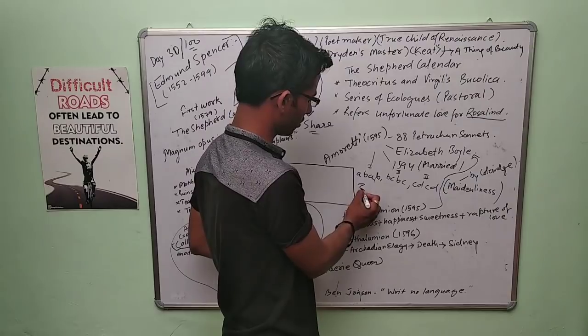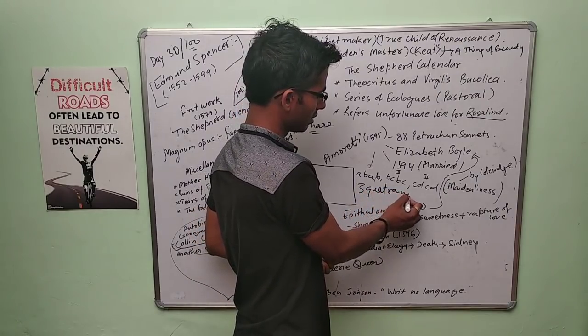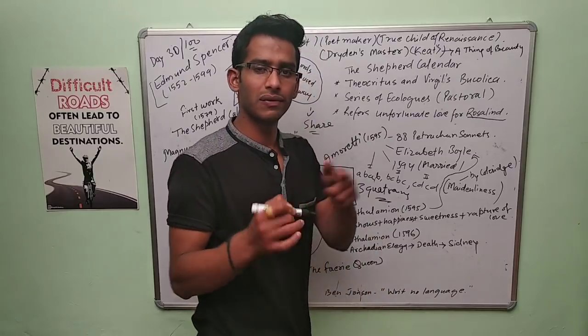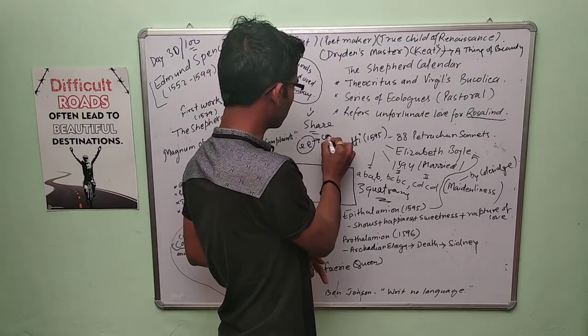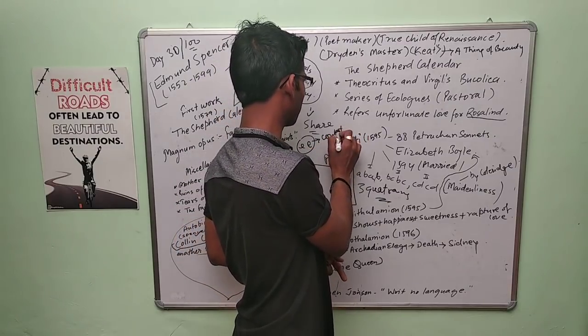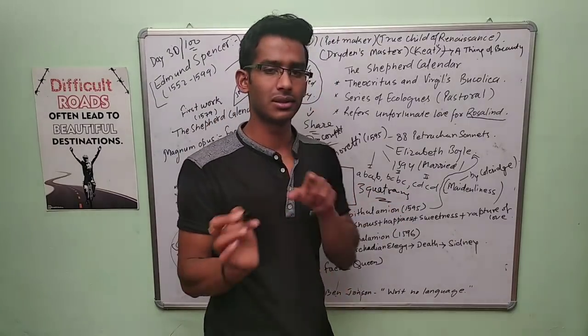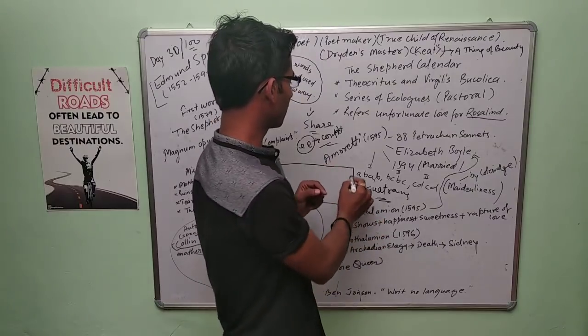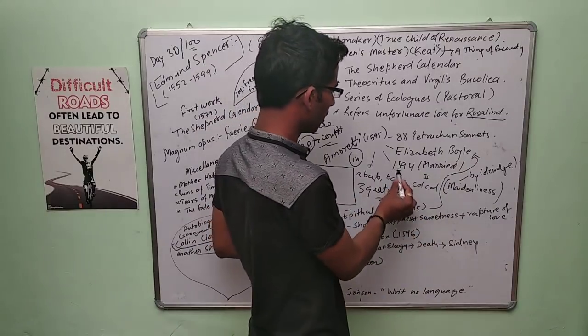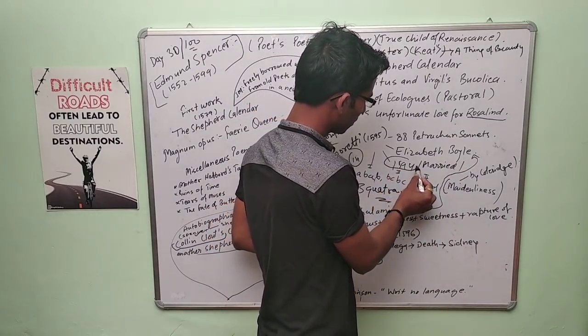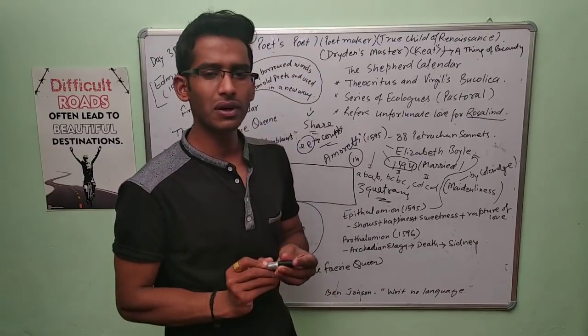You can see here he has three quatrains. What is the difference? It is different than Shakespeare because Shakespeare uses EE—he uses a couplet. So you can remember this thing: Shakespeare uses a couplet, but Spenser is using three quatrains. For sonnet, we know sonnet has 14 lines. Elizabeth Boyle—he got married to her in 1594.